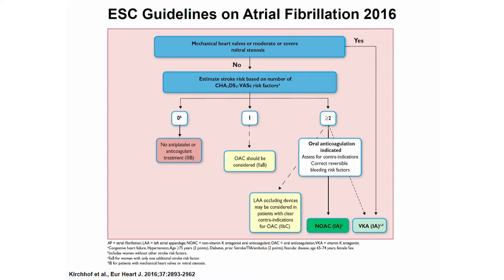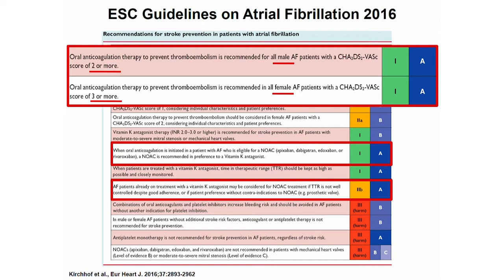There is a differentiation made in the new guidelines: female sex is not a good risk predictor in the low-risk cohort, so it was taken out of the equation. The indication for oral anticoagulation differs between males and females. A male patient with a CHADS-VASc score of 2 has a clear indication. For a female, you need a score of 3, meaning we effectively exclude female sex. So in scenario one without hypertension, anticoagulation is optional, while in scenario two with a score of 3, it is clearly indicated.